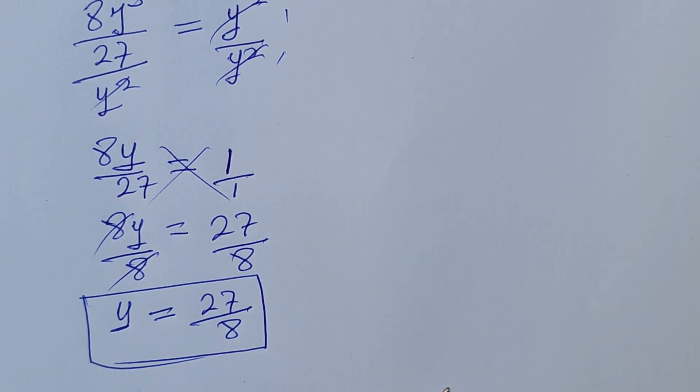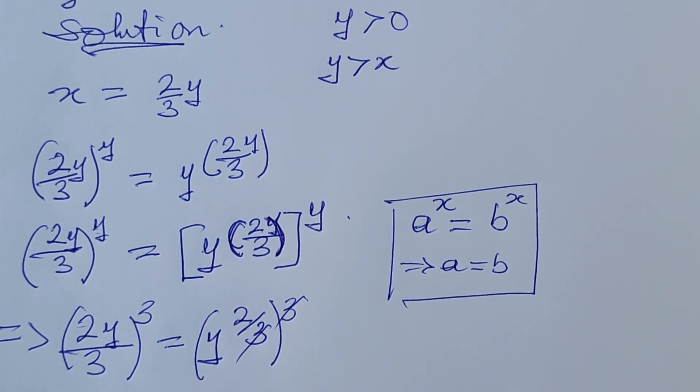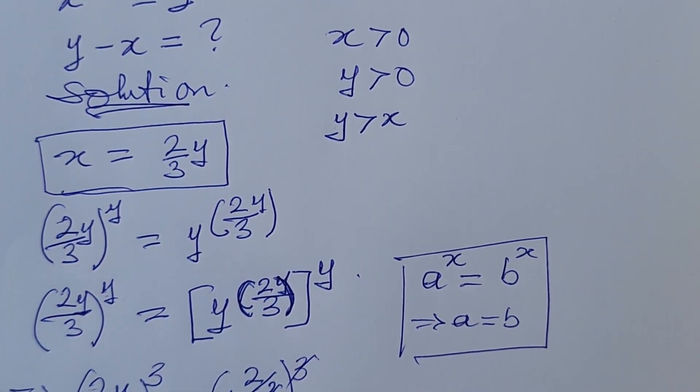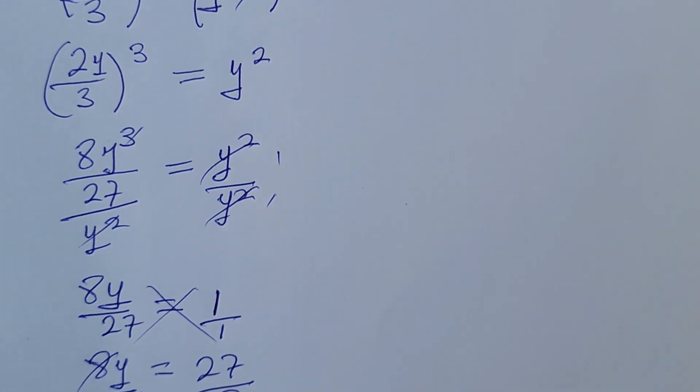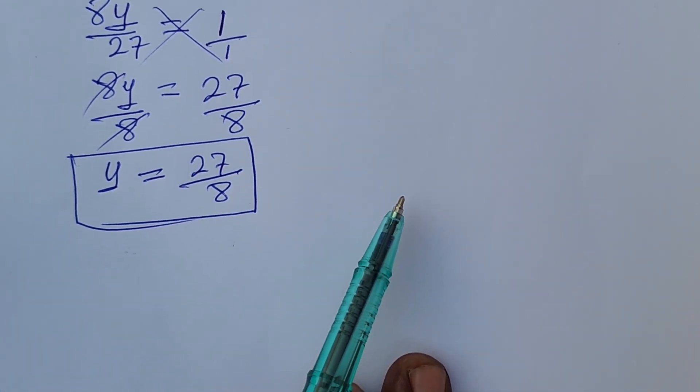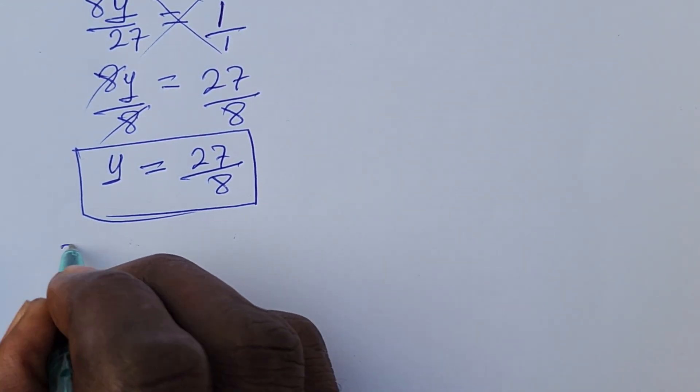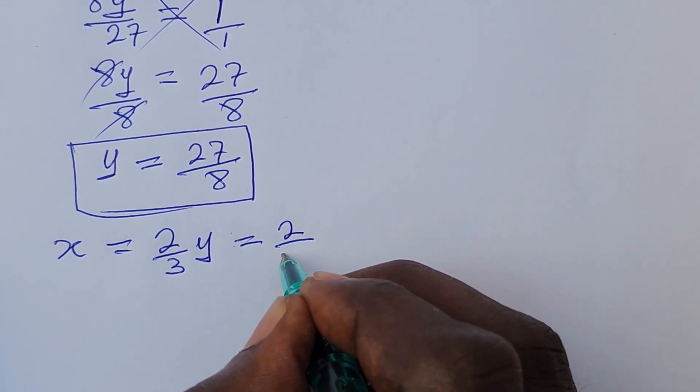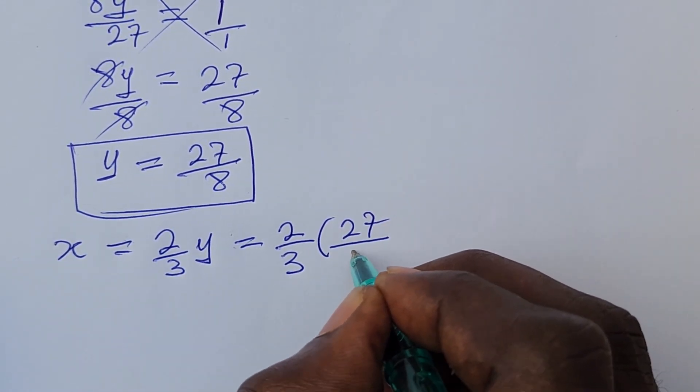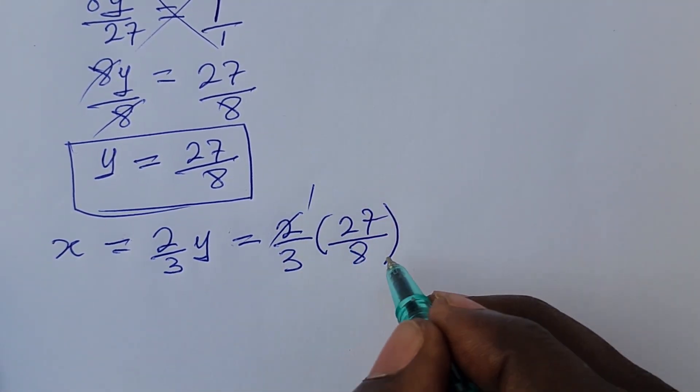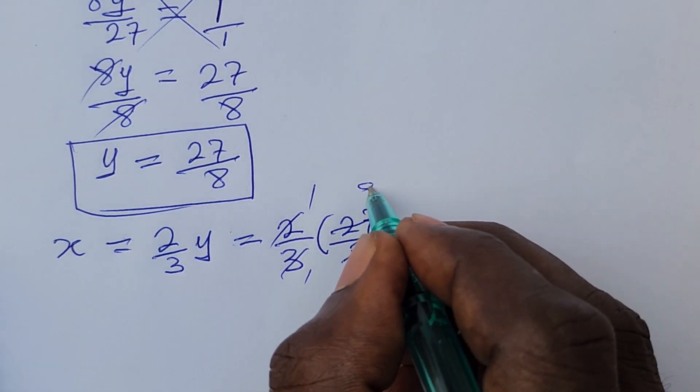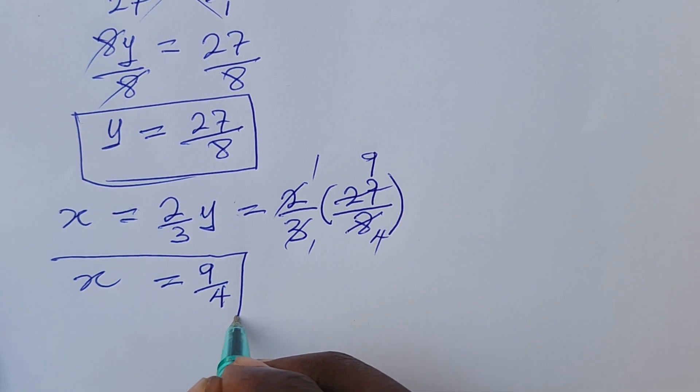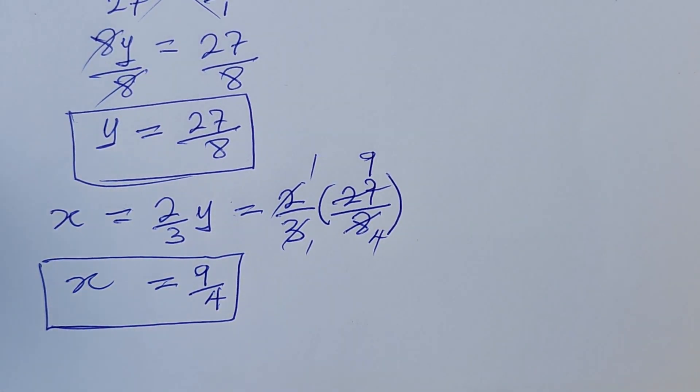Now we've succeeded in looking for our y. Then if you look at the beginning, we have also succeeded in looking for our x. From this expression where we have x equals 2 over 3 times y, we can now substitute the value of our y into that expression. So x is equal to 2 over 3 times y. This will now give us 2 over 3 times 27 over 8. 2 and 4, 3 and 9. Therefore, our x will automatically give us 9 over 4.